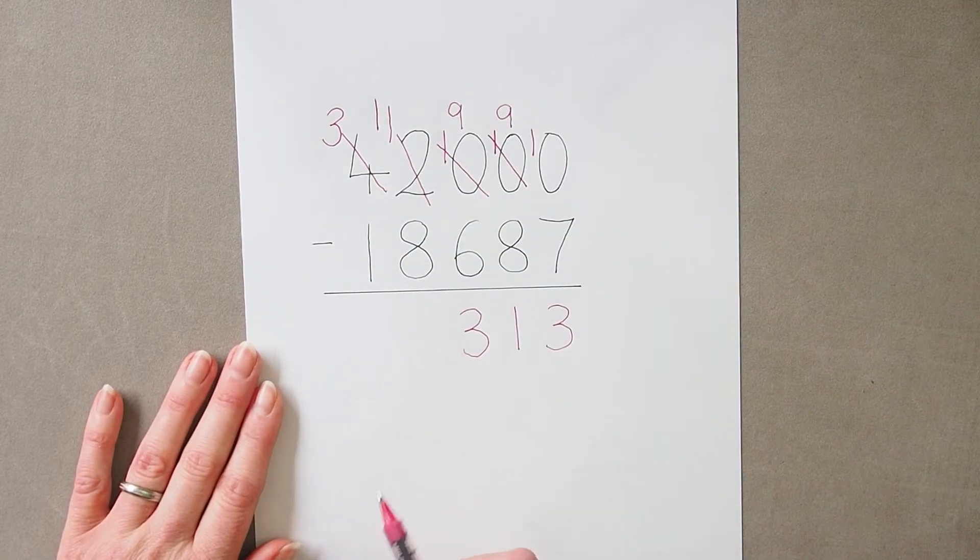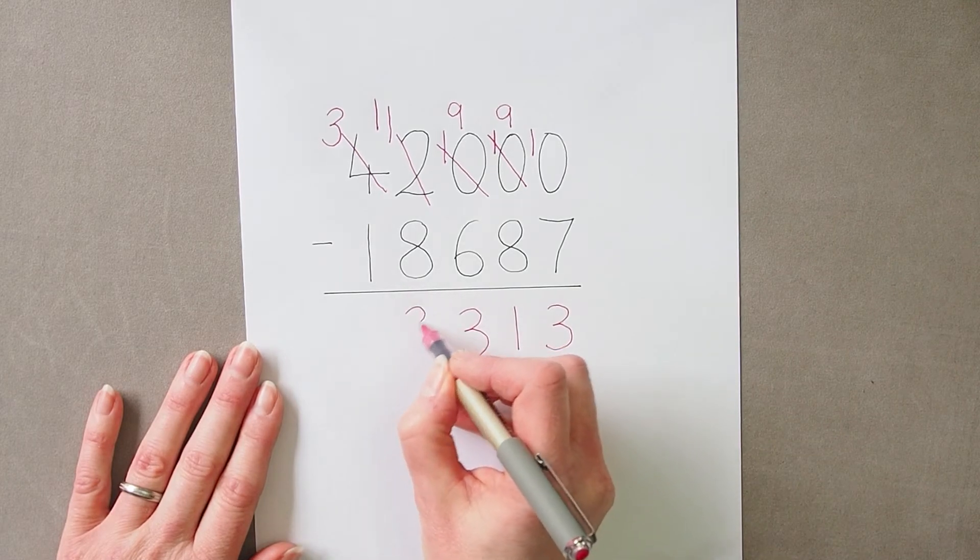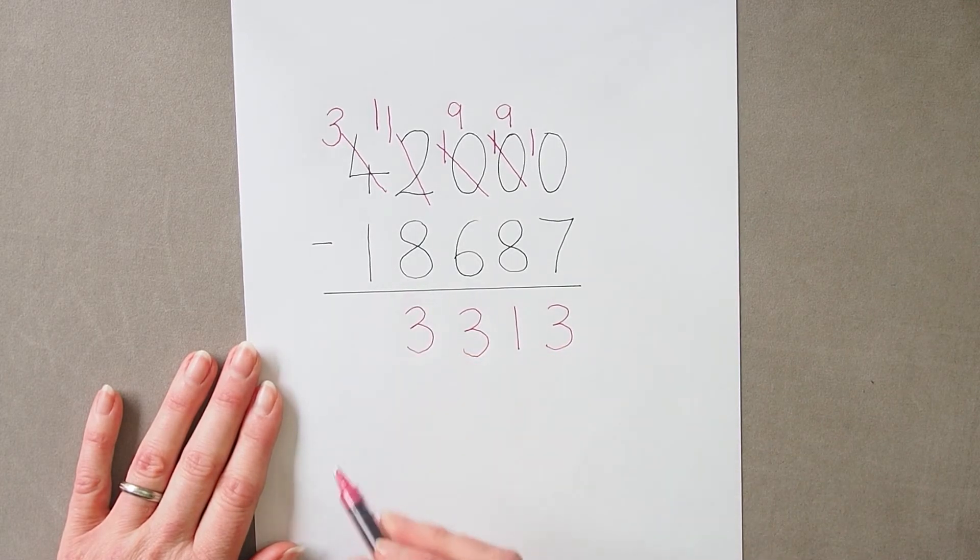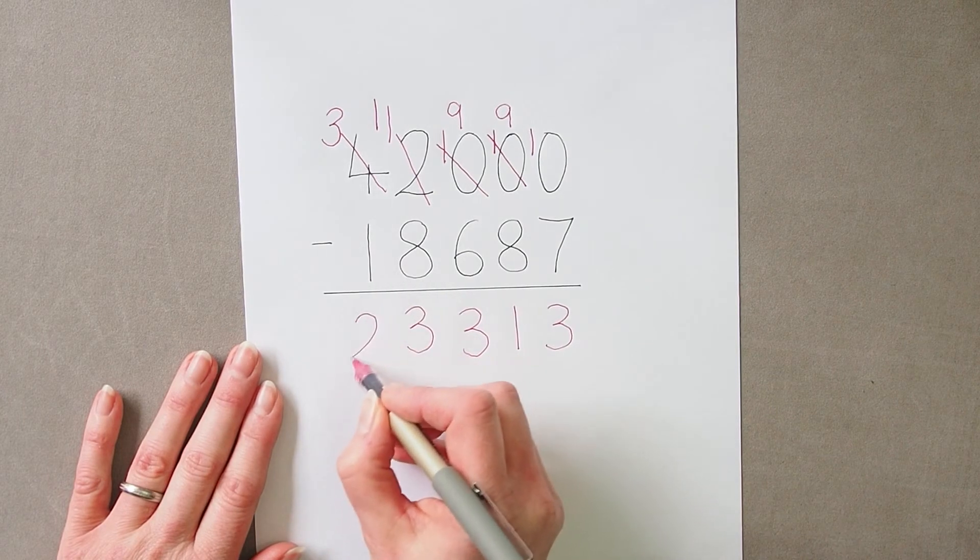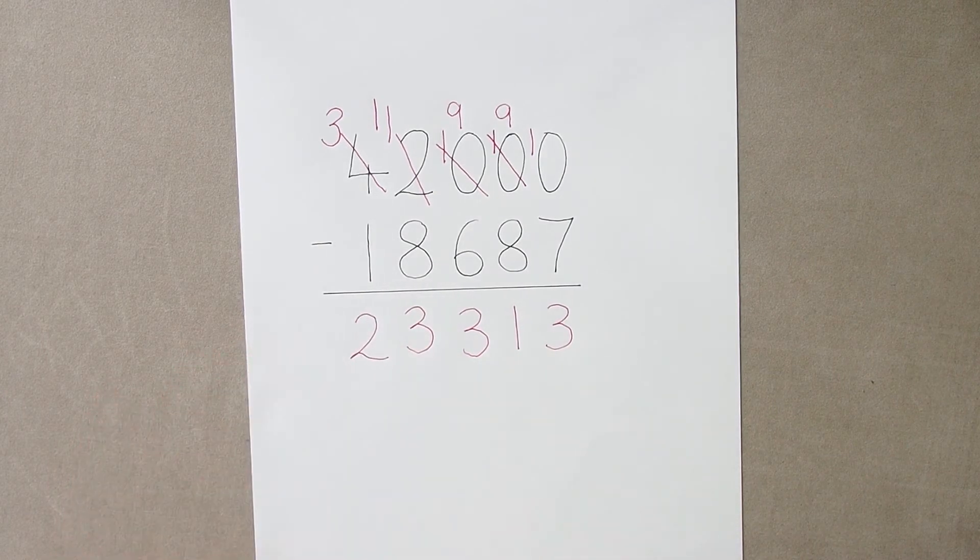Eleven subtract eight is three, and three take away one is two, giving me my answer.